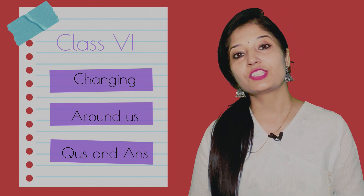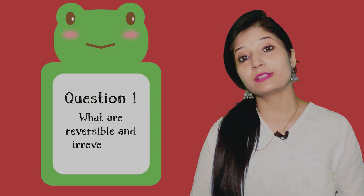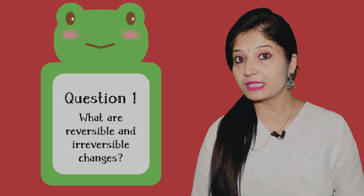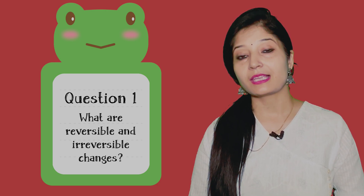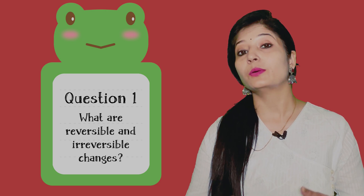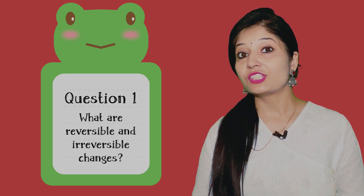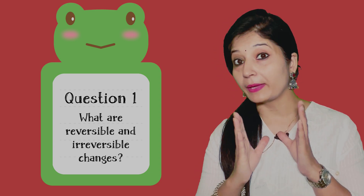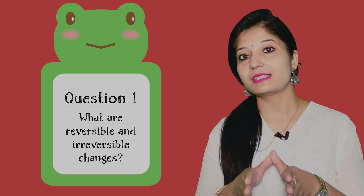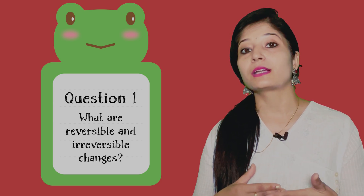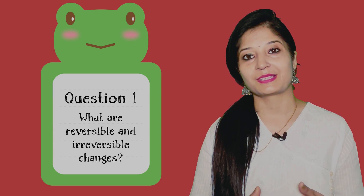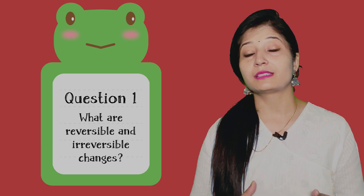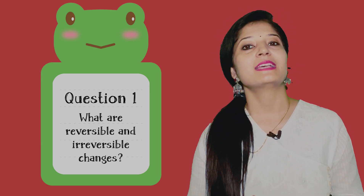The first question is: what is reversible and irreversible change? Reversible changes are the changes in which we can get back the original substance. The changes made can be undone, like stretching a rubber band or blowing a balloon. So the changes in which we can reverse the conditions and get back the original substance are known as reversible changes.